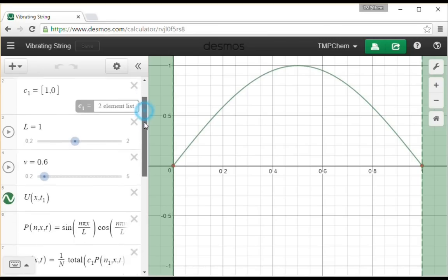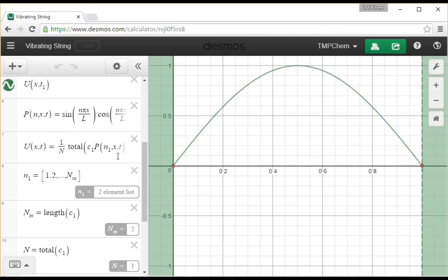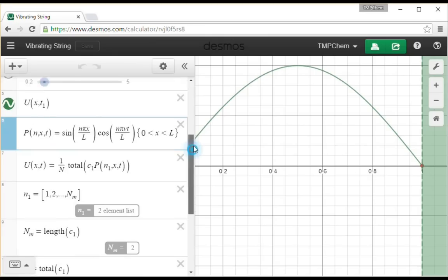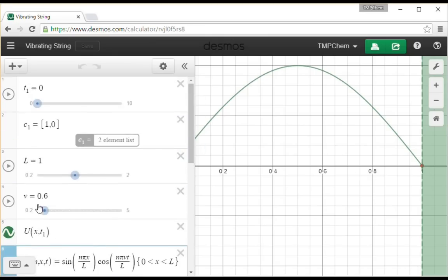I have my classical wave equation solution. My individual solutions, p_n(x,t), is the sine of n pi x over l times cosine of n pi vt over l, where my l is specified by this little slider up here. My v is specified by a slider as well, so I can change those values as I want.